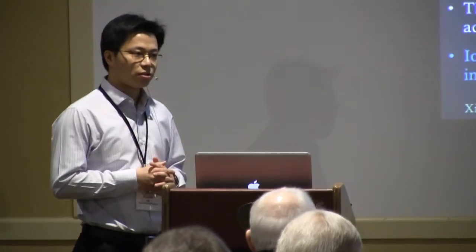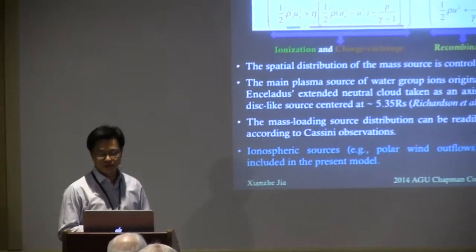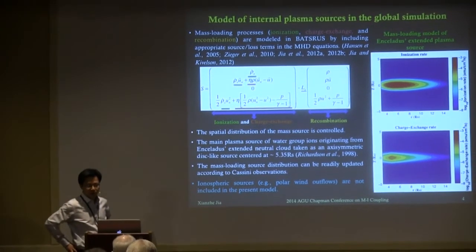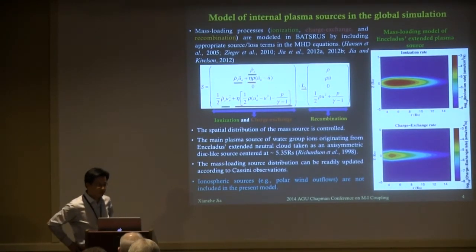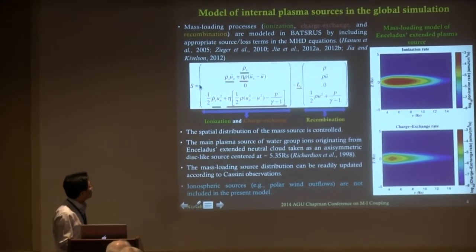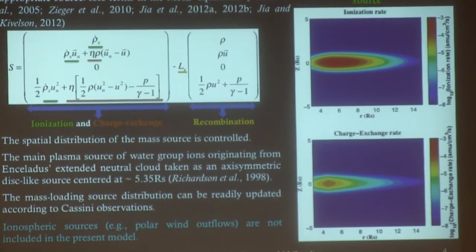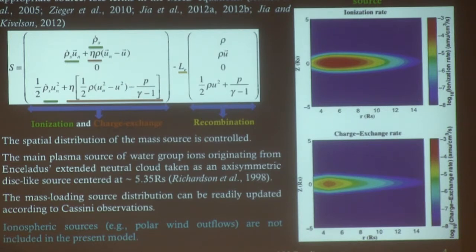The mass loading source is critically important to include in Jovian-Saturnian simulations. In BATS-R-S, we explicitly include the various terms associated with mass loading — for example, ionization due to photo-ionization, electron impact, and charge exchange between ions and neutrals. When you include mass loading, the ionization, charge exchange, and recombination change the momentum, energy, and mass of the plasma. The right-hand side shows a typical distribution of the ionization pattern and charge exchange we use for Saturn simulations.